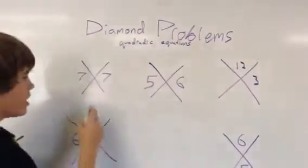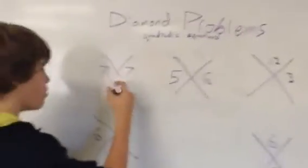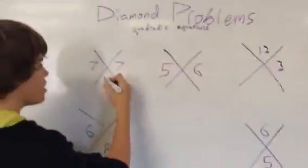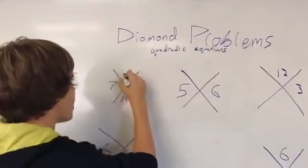How you solve diamond problems is 7 plus 7 would be the bottom of 14, and 7 times 7 would be the top of 49.